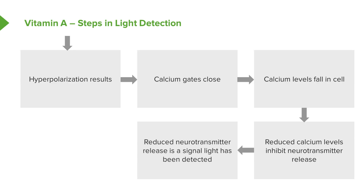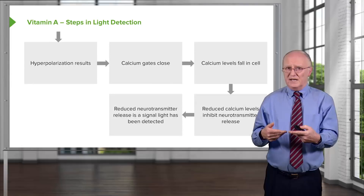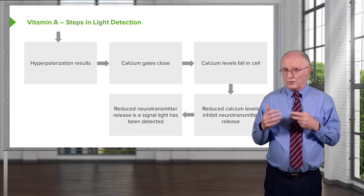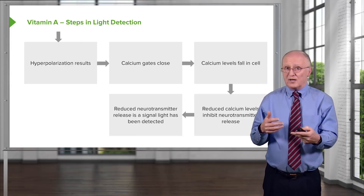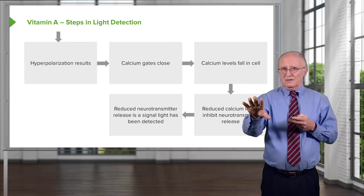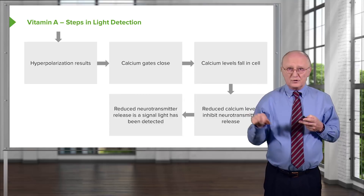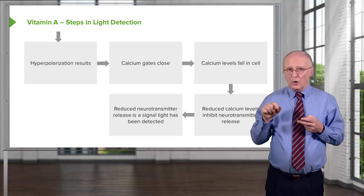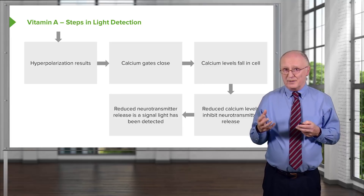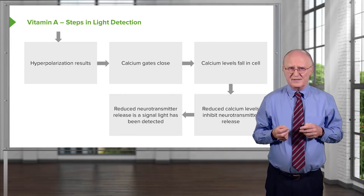Eye cells are very different from other nerve cells. First, they are unpolarized in the unstimulated state — it is the stimulated state that causes them to be polarized, which is different from a regular nerve cell. Second, regular nerve cells release neurotransmitters when signals are received, but eye cells are releasing neurotransmitters all the time, and only when they cease sending neurotransmitters is a signal received by the brain. So it's a very different kind of system than a regular nerve cell.